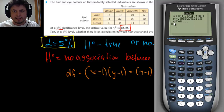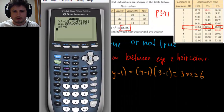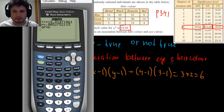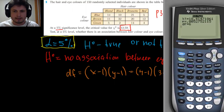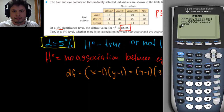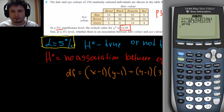The calculator confirms DF is six — degrees of freedom are six — which matches what we found manually. The calculator also shows you the P-value, which we'll discuss in the next video. Your chi-square value is shown as 18.4.